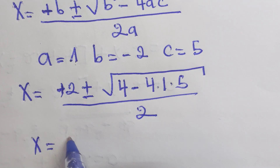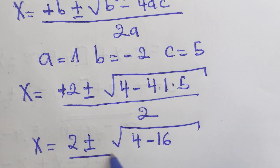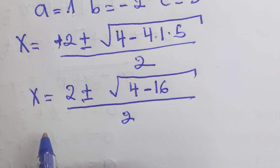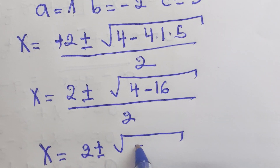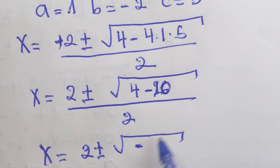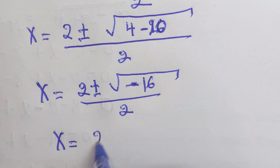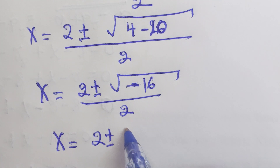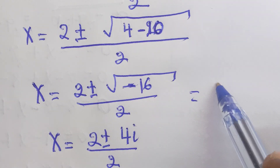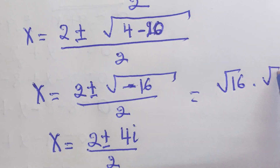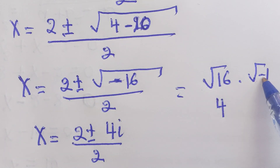x equals 2 plus or minus square root of 4 minus 16, over 2. This gives x equals 2 plus or minus square root of negative 16, over 2. Then x equals 2 plus or minus 4i over 2, because the square root of 16 is 4, and the square root of negative 1 is i.